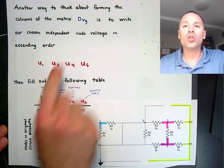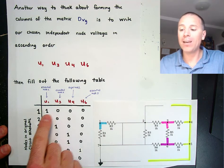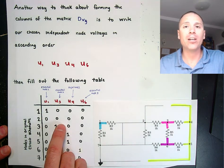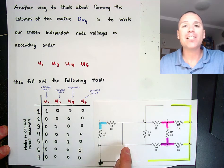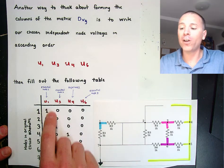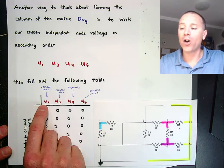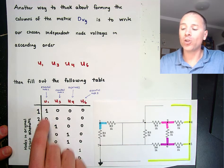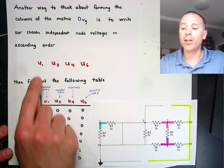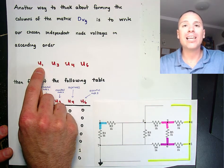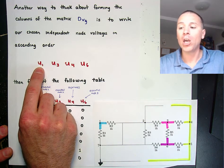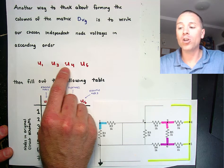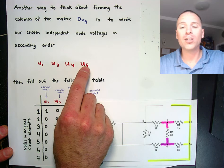In the construction of the voltage source deflation matrix D sub vg, one way to get it is algebraically: write the vector u sub g out, look at the dependencies between the individual entries, and figure out a way to write it as that linear combination — particular plus something that gets sent to zero. Another way is to write out a table and use the deactivated circuit schematic to fill out individual entries. We've chosen independent values u1, u3, u4, and u6 — we write those in ascending order and enumerate the columns in that order.